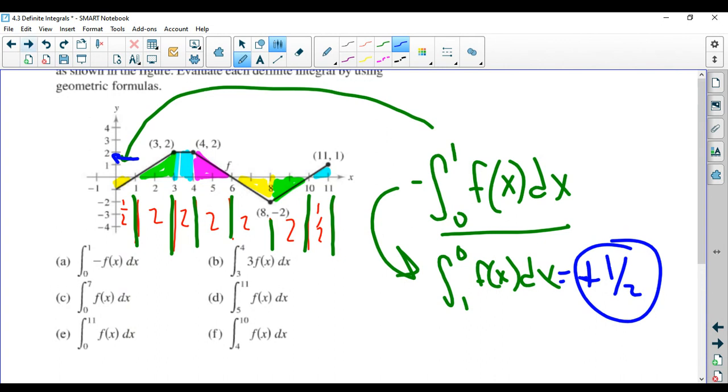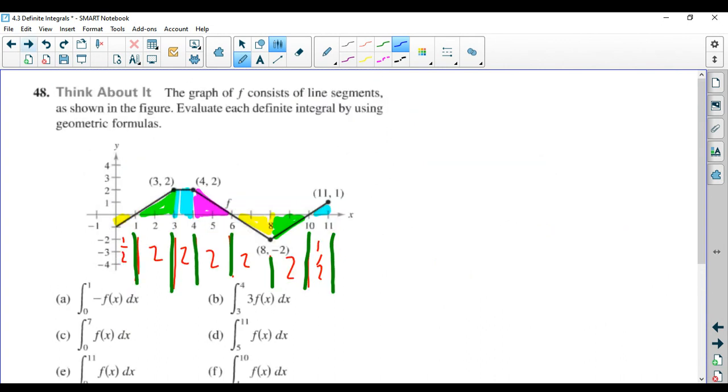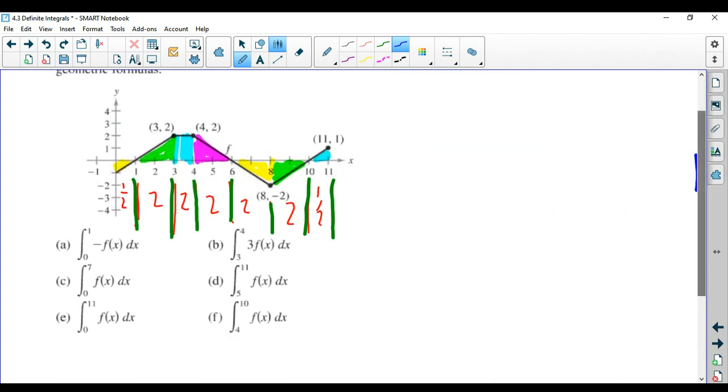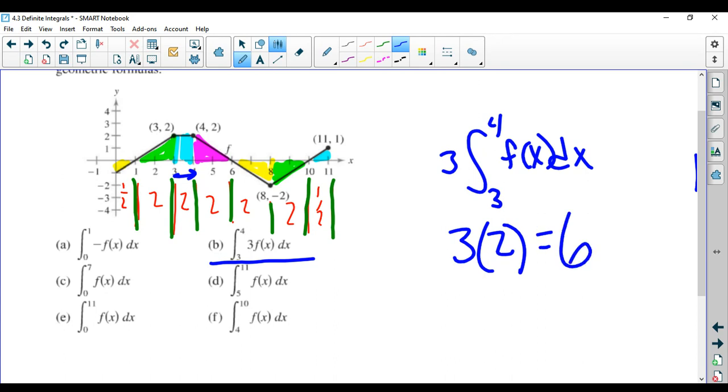Second one, b. The integral of 3f(x) from 3 to 4. Again, I'm going to factor out that constant. From 3 to 4, you can see right here, the area is 2, and it's positive. The graph is positive, so this is just 3 times 2, which is 6. Easy.